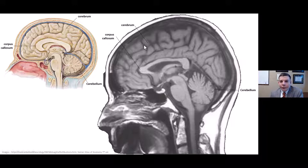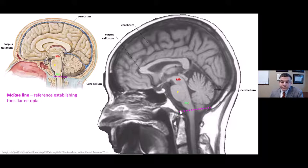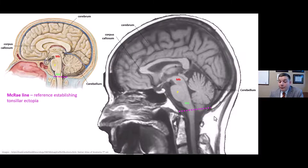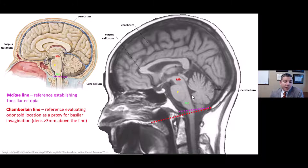We can see the cerebrum, corpus callosum, cerebellar landmarks in the posterior cranial fossa, the brainstem — midbrain, pons, medulla — and the spinal cord. We also see McRae's line defining tonsillar ectopia: descent greater than 5 millimeters triggers a Chiari diagnosis. There's the diamond-shaped fourth ventricle and the nodulus on the cerebellum. Chamberlain's line — from the opisthion to the hard palate — is a proxy for basilar invagination, which is associated with Chiari malformation, often described like a cork not fitting well inside a wine bottle.